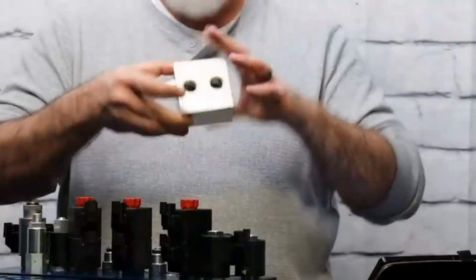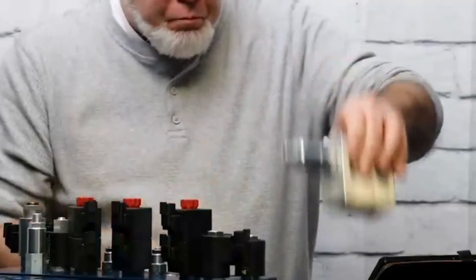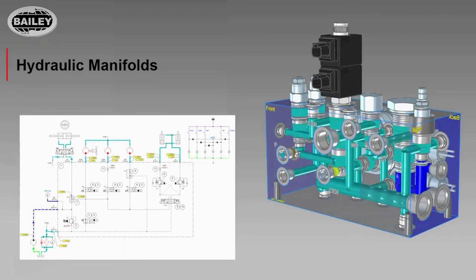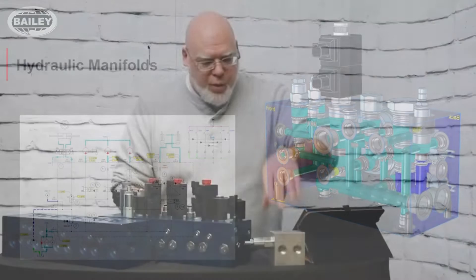So this is a simple manifold. What manifolds do is they provide a path for the oil to go through. We talked about hoses — hoses usually point A to point B. Well, manifolds can go from point A to point B to point C to point A to point E, and so on and so forth.